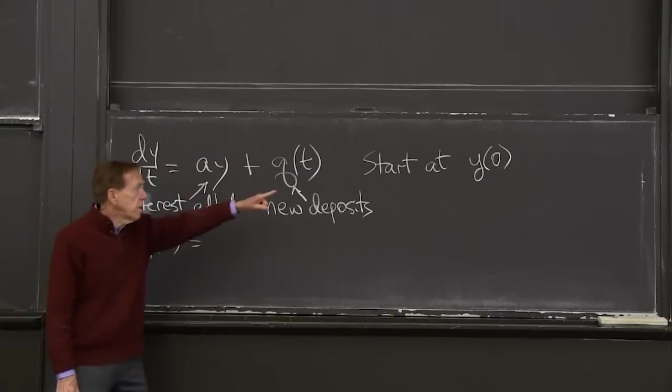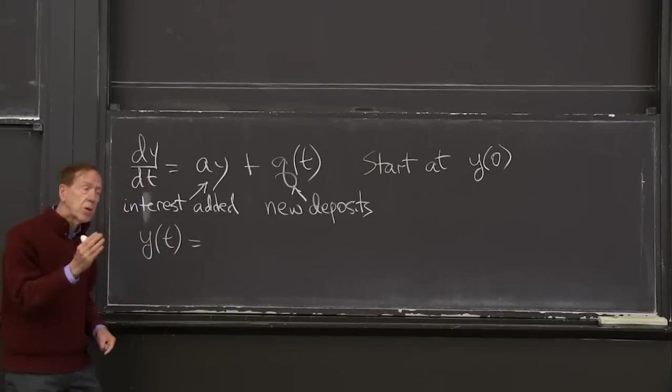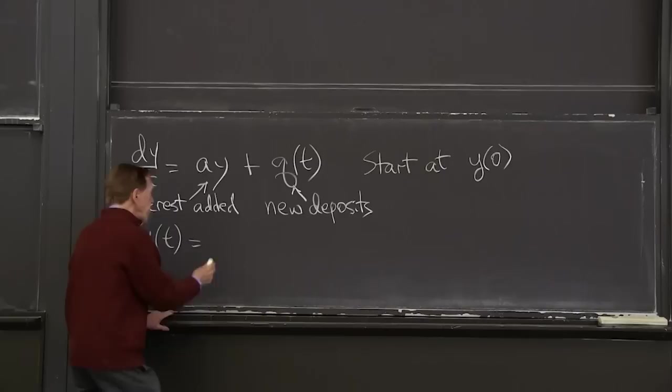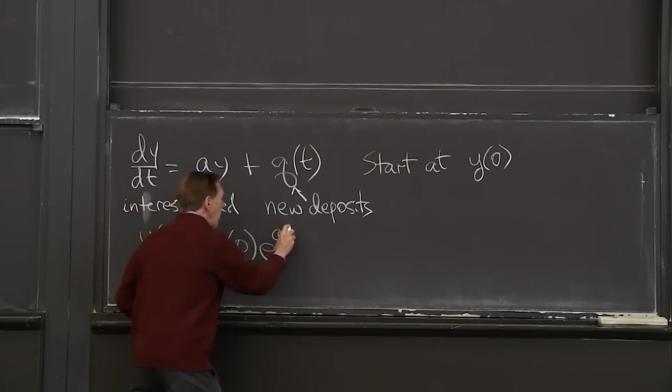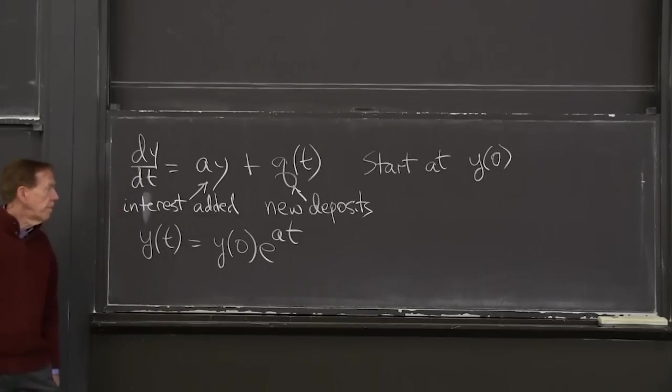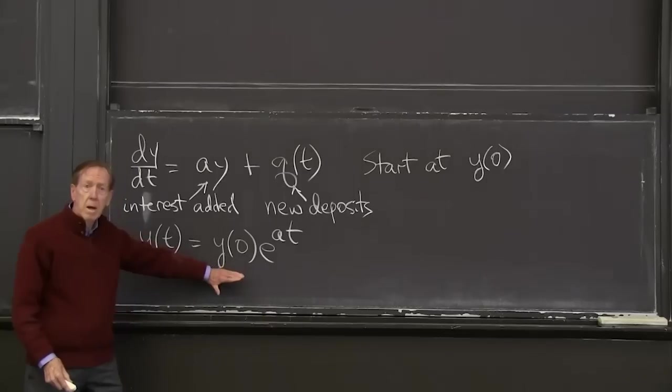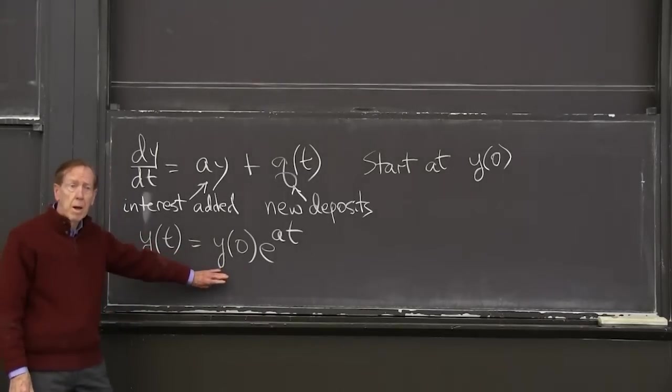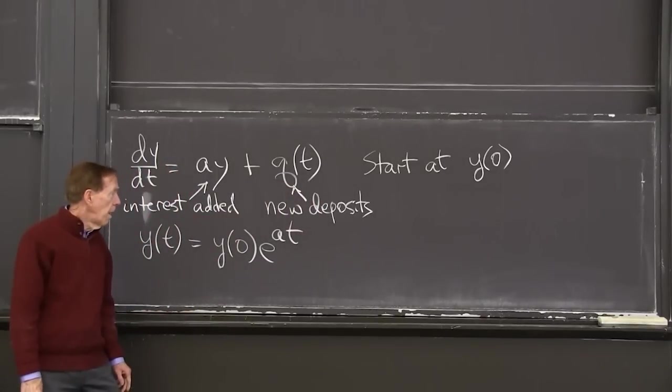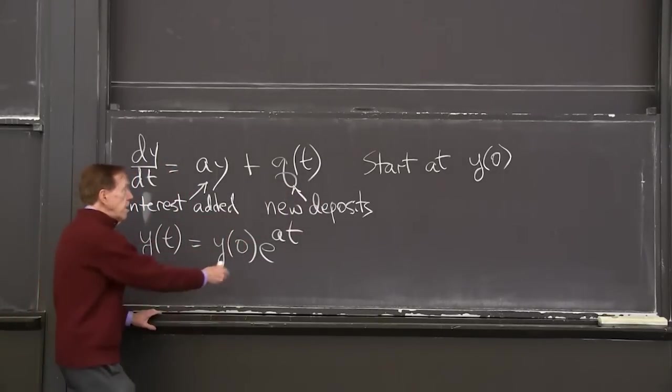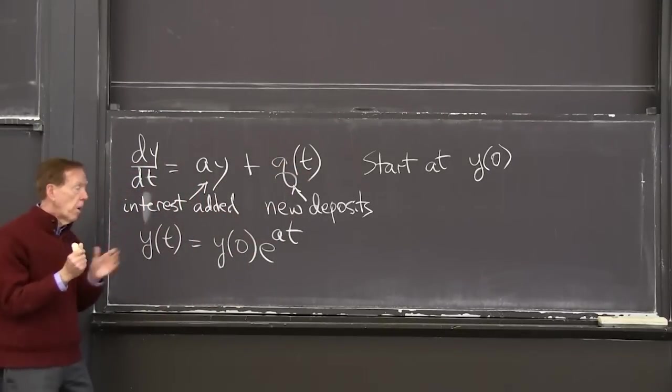So first, the y of 0, that's a once in a lifetime deposit to start the account. And it grows, as we know, with the interest rate as the exponent. The question is, so that's the null solution that matches the initial condition. Null solution because there are no deposits here. This solves this part of the equation, the null part.